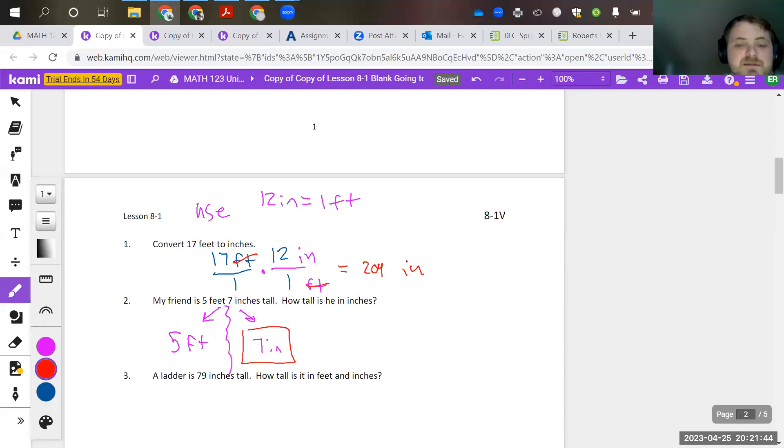But with the five feet, I need to know what that is in inches, which that comes from five feet over one. I'm going to have my foot in the denominator again, no pun intended, and then my 12 inches on top because, again, that feet and the feet need to cancel out. So that gives me that five feet is 60 inches. Therefore, my friend is 67 inches tall in total from the seven inches and the 60 inches together. Hopefully that's making a little bit of sense right there.